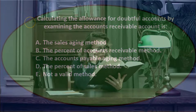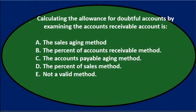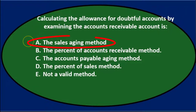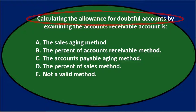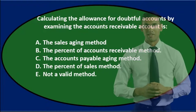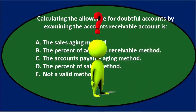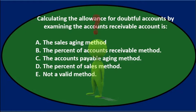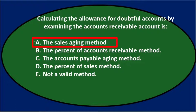We'll read through this again and go through the process of elimination. Calculating the allowance for doubtful accounts by examining the accounts receivable account — we're talking about the contra asset account, how much of those receivables we think is uncollectible. Option A says the sales aging method, and that is concentrating not on the receivable but on the revenue, on the sales side — the income statement side — so it's not A.